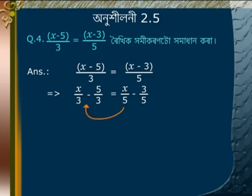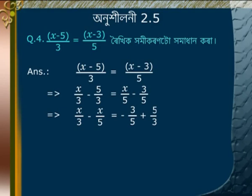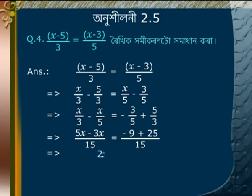Transposing: x/3 minus x/5 is equal to minus 3/5 plus 5/3. Taking LCM of 15: (5x minus 3x)/15 is equal to (minus 9 plus 25)/15. Multiplying both sides by 15 gives 2x is equal to 16.